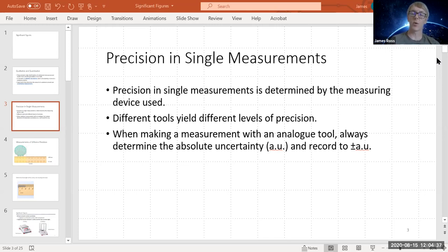I have separate videos, which I'll try not to duplicate here, but I'll refer you to, where I'll show you how to determine the absolute uncertainty. We'll just use it here in this video, but in other videos, I show you how to determine the absolute uncertainty. And then I'll show you in another video how to combine absolute uncertainties into combined errors. So when making a measurement with an analog tool, you need to determine the absolute uncertainty and record to plus minus the absolute uncertainty.